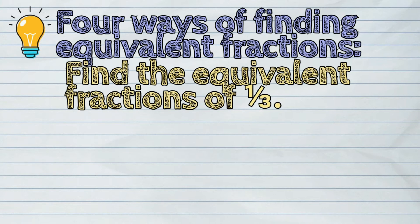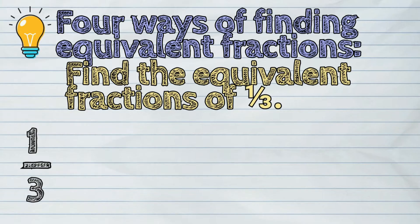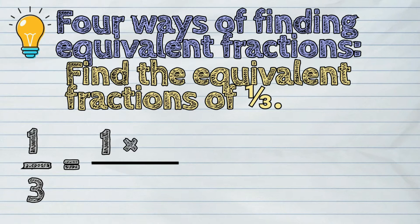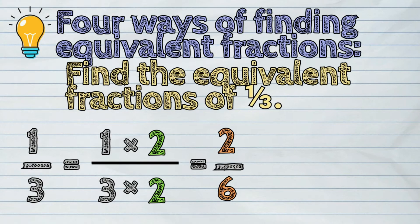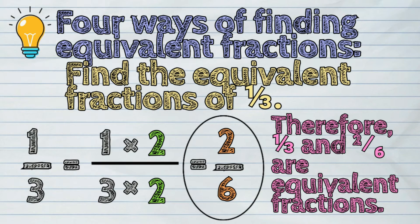Example: let's find the equivalent fractions of one-third. Let us multiply its numerator and denominator by two. Numerator one times two is two. Denominator three times two is six. So the answer is two-sixths. Therefore, one-third and two-sixths are equivalent fractions.